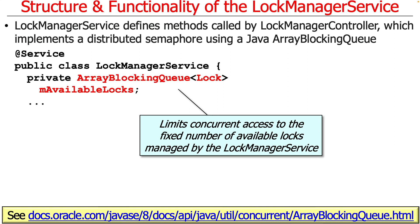The way ArrayBlockingQueue works, in a nutshell, it has three methods that matter for our purposes. It has a method called poll, which checks atomically if a lock is available and returns it if there is one — otherwise it returns null. It's a non-blocking operation, and we use that very heavily in this implementation. There's also a take method, which blocks; we don't use take much, though we do use it for one thing. And then there's offer, where you give it a lock and it puts it back into the ArrayBlockingQueue without blocking. As long as the client follows the protocol, you can use offer and all will be well.